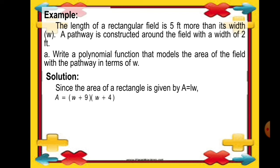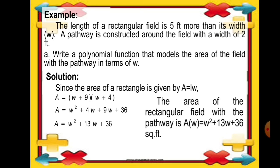Simplifying, we have W squared plus 4W plus 9W plus 36. Combining like terms, A equals W squared plus 13W plus 36. So the area of the rectangular field with the pathway is A of W equals W squared plus 13W plus 36 square feet, expressed in terms of the width.